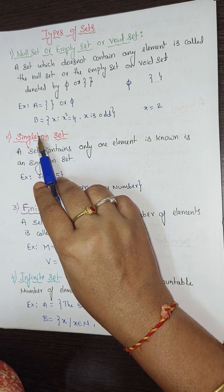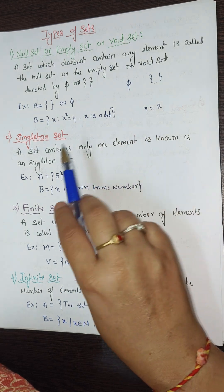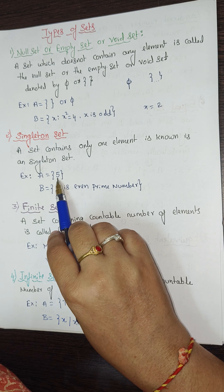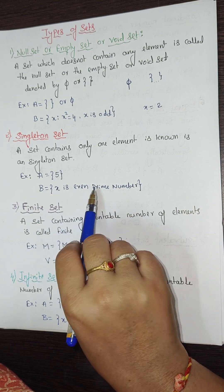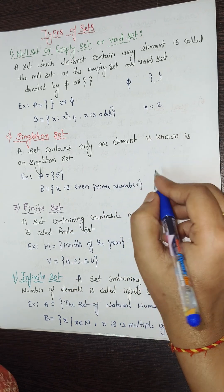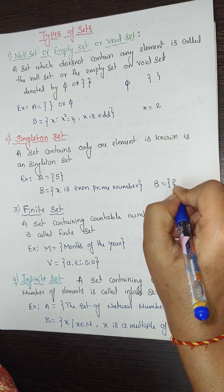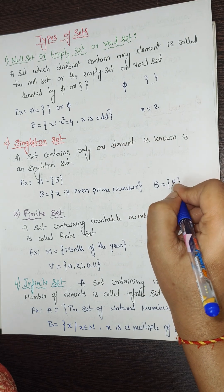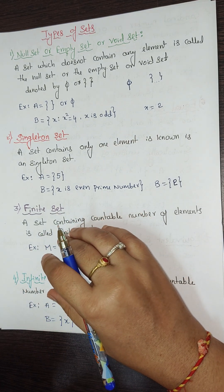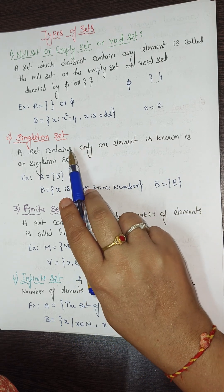The next type is singleton set. A set that contains only one element is called a singleton set. For example, A = {5} is a singleton set. Another example: the set of even prime numbers — there is only one even prime number, which is 2. All other prime numbers (3, 5, 7, ...) are odd. So that set is {2}, a singleton set.